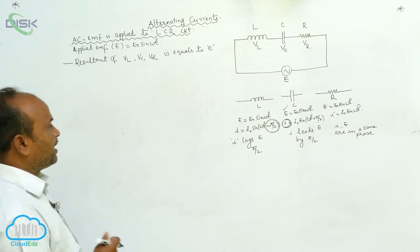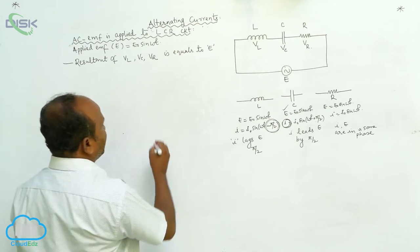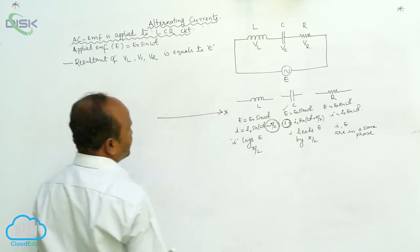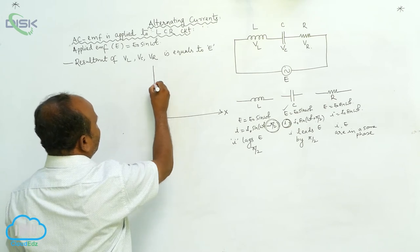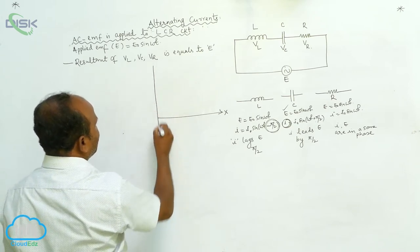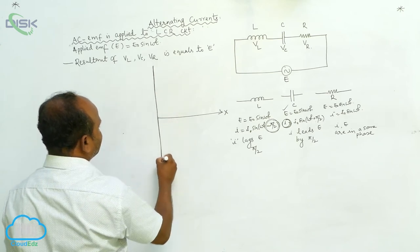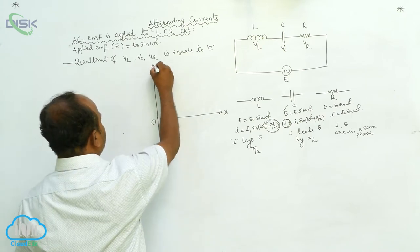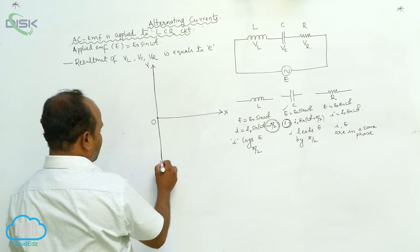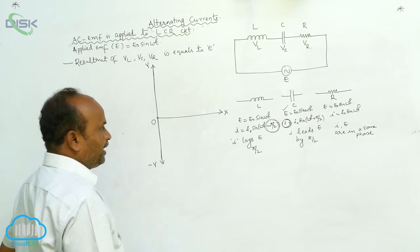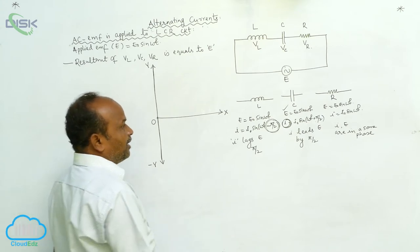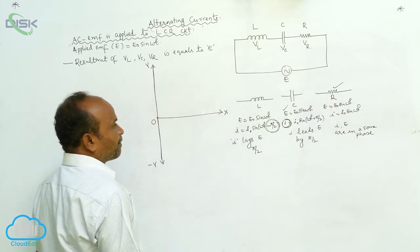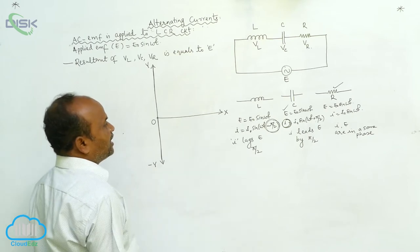Now, what is the vector diagram? In the case of the resistor, this is the x-axis and this is the y-axis — positive y-axis and negative y-axis. In the case of the resistor, current and voltage are both under the same phase, so the current direction and voltage are along the same direction.